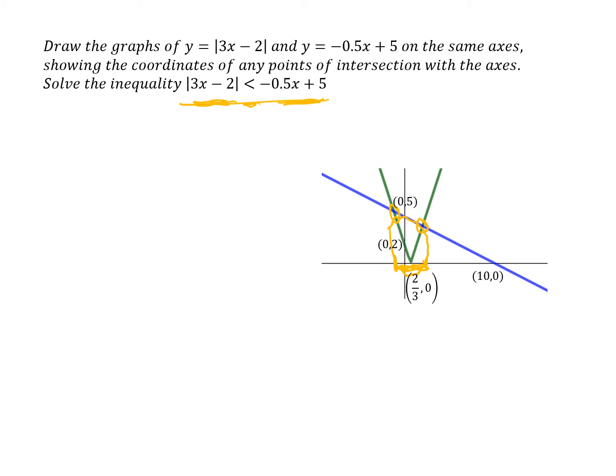So in order to do that, I'm just going to write down on the diagram what the equations of each line segment are. So for this right-hand part of the modulus graph, which is the part of the graph 3x minus 2,